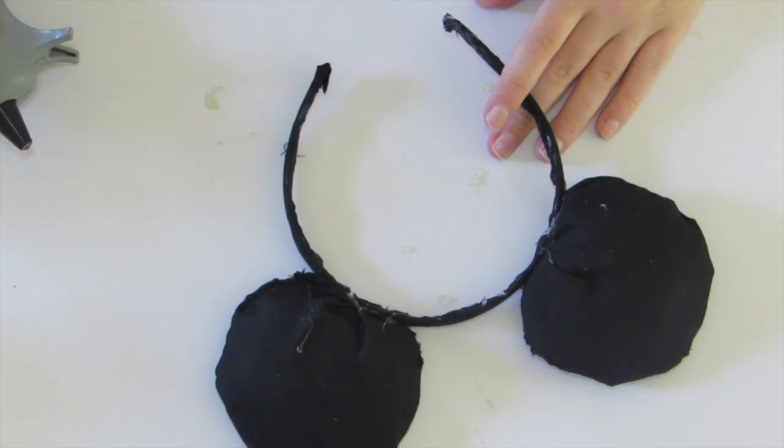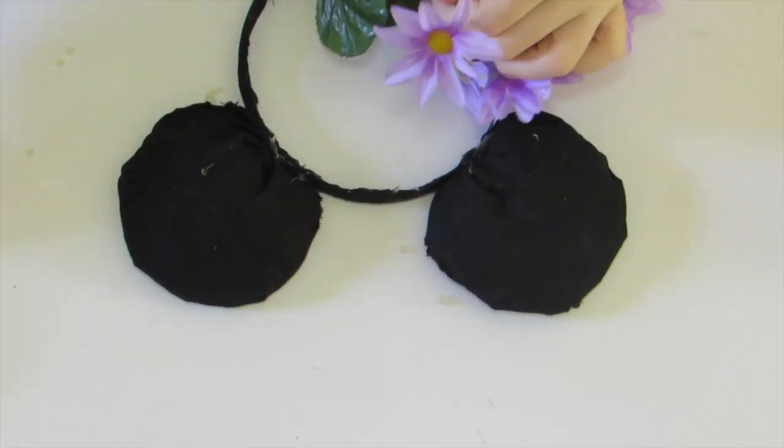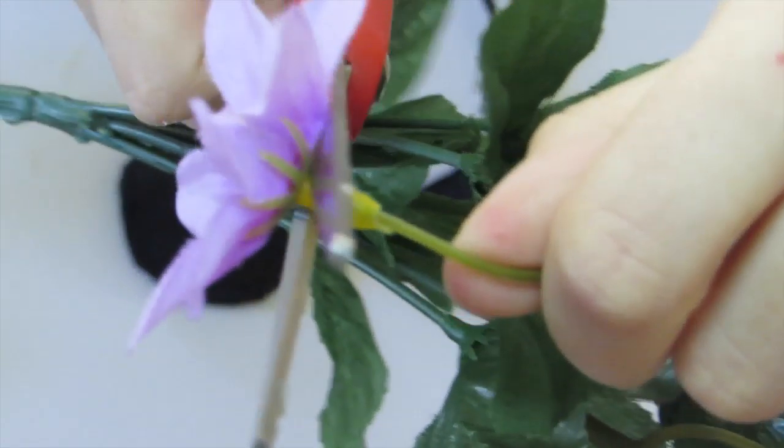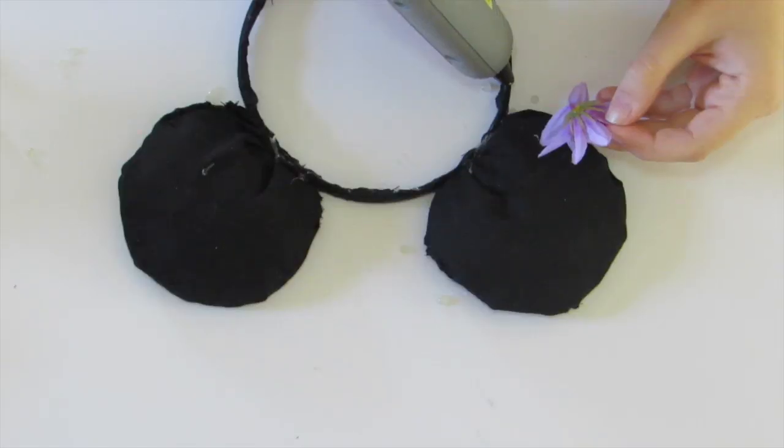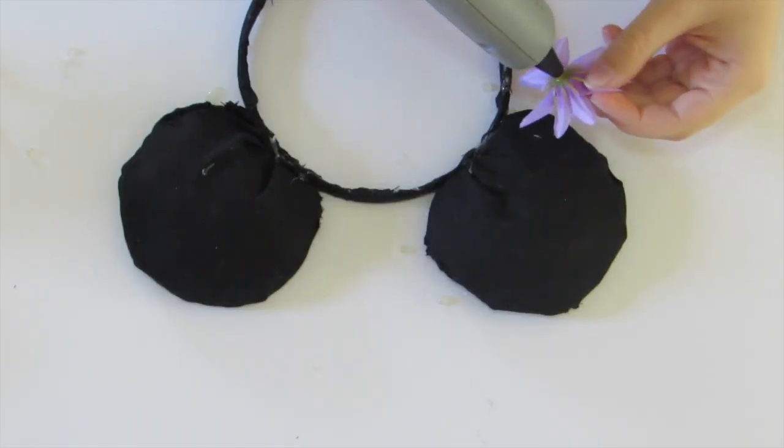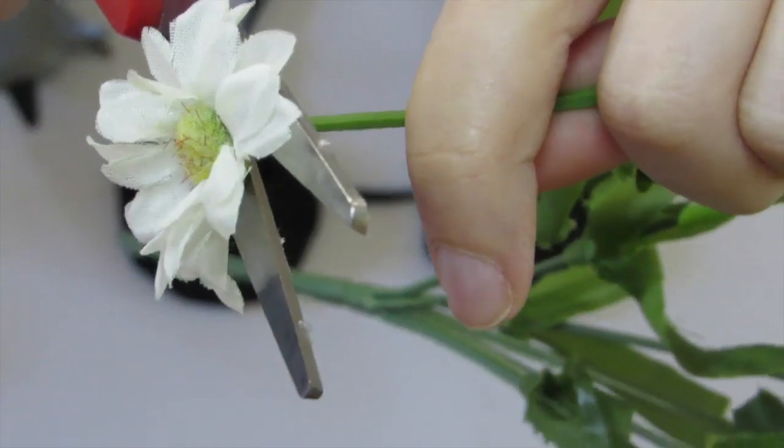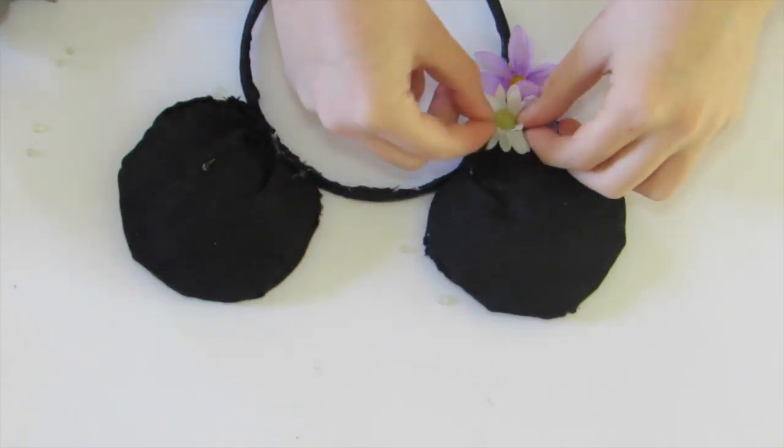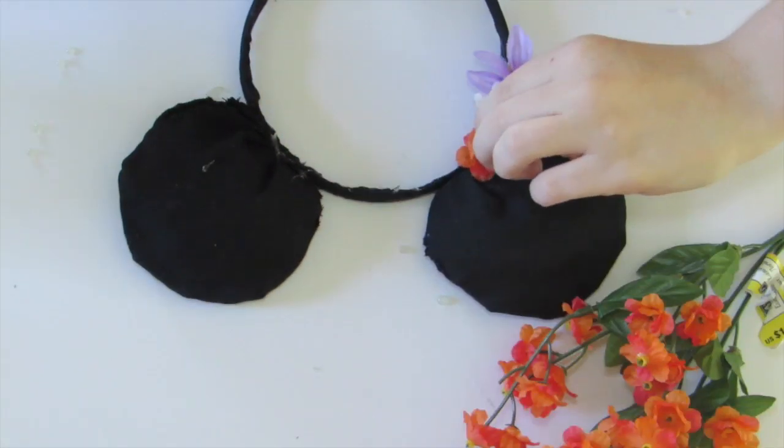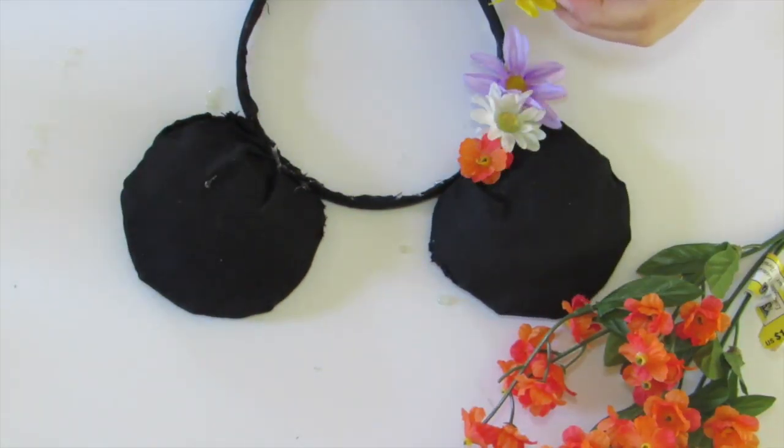Now we just have some plain mouse ears and you can decorate them however you wish but I'm going to use flowers. Be sure that when cutting off the flowers you cut as close to the flower as possible. Next just put some hot glue on the back of the flower and press it hard onto the headband and make sure that it's very secure. Continue adding flowers with whatever pattern you would like.